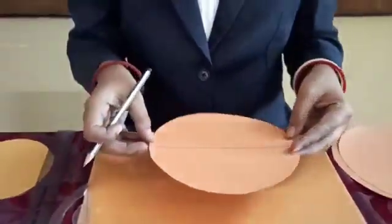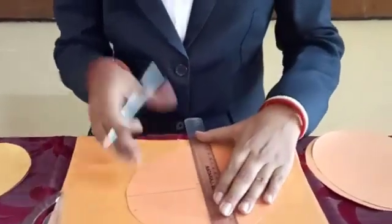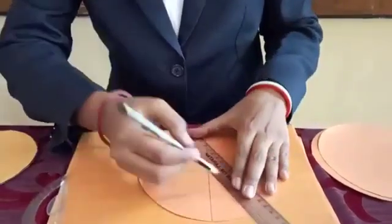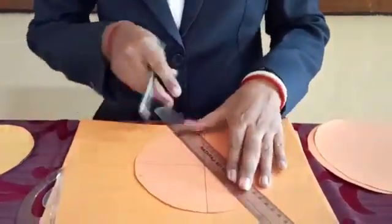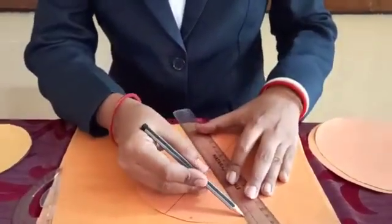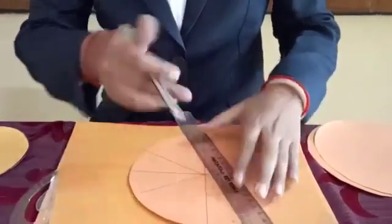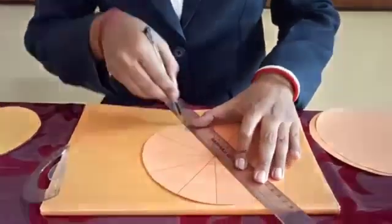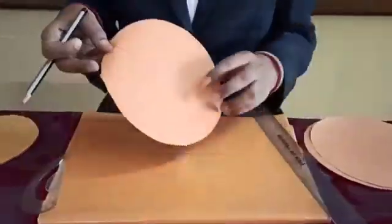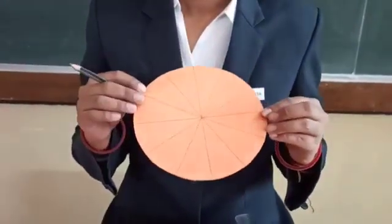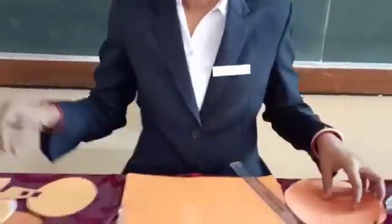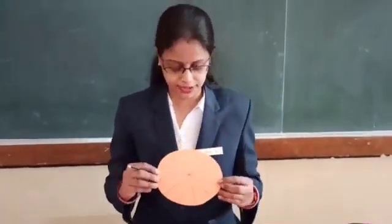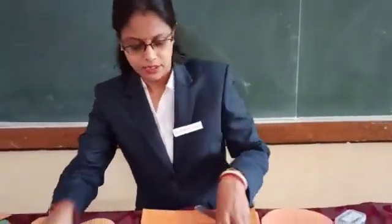This is what we have done. After this, with the pencil and scale we are going to join these lines. So this is the way we have divided the circular portion or the sheet into 12 equal parts. We will get it after drawing the lines with the green sketch pen.